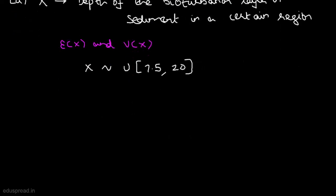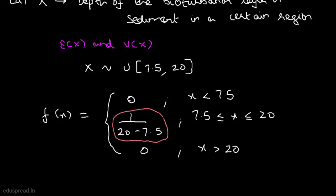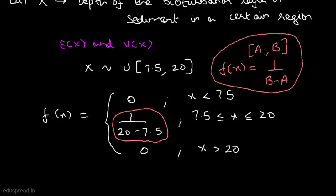We can write the PDF of X as follows: f(x) = 0 for values of x less than 7.5; 1 divided by (20 minus 7.5) for values of x greater than or equal to 7.5 and less than or equal to 20; and 0 for values of x greater than 20. We can write this because if X is a continuous random variable uniformly distributed over an interval (a, b), then f(x) = 1/(b − a) for values of x between a and b.